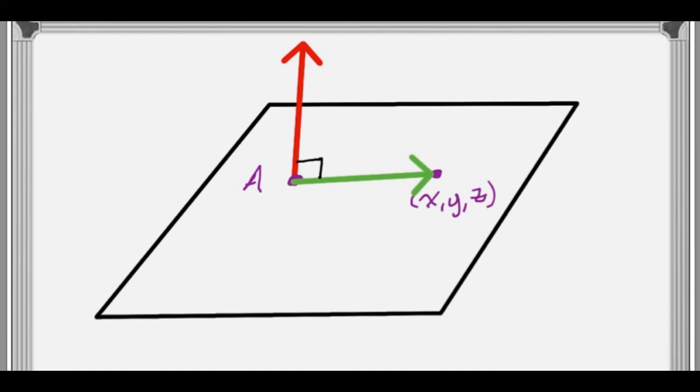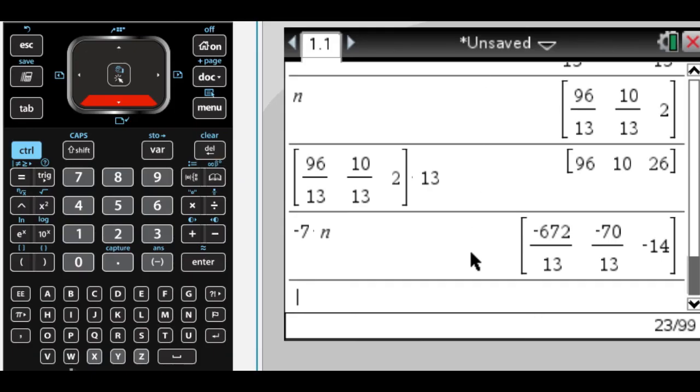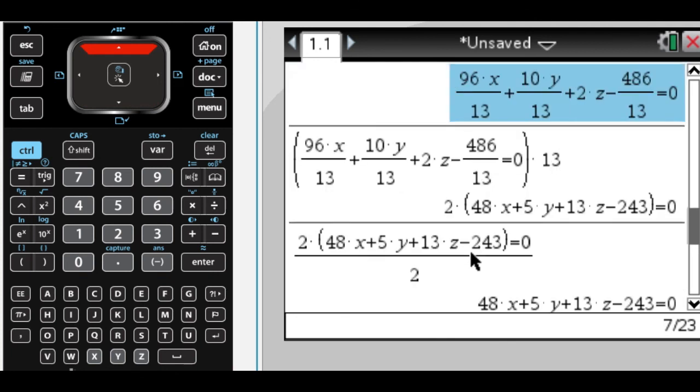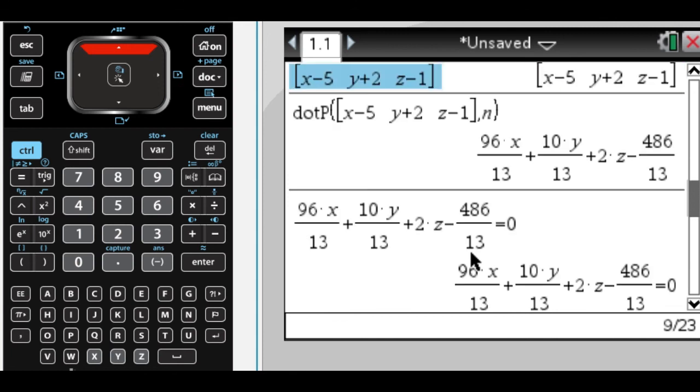Later on, you're going to learn something called the cross product, which kind of generalizes the process of finding the vector N. But again, for this purpose, you don't need it. So why clutter what you understand at this point?